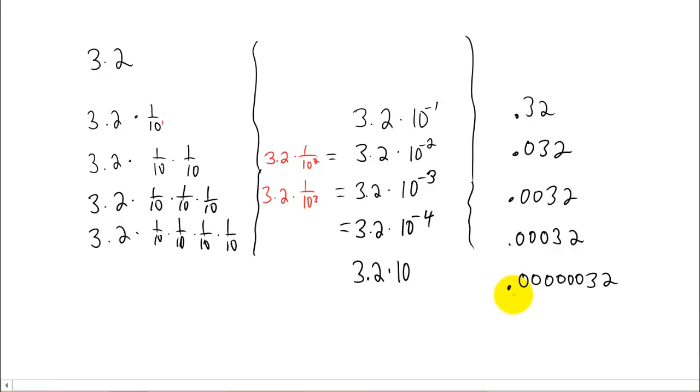What is that power? Well, you just have to count the decimal places. See, 3.2 would be here, and you're counting 1, 2, 3, 4, 5, 6, 7 decimal places to the left. So we must have multiplied 3.2 by 10 to the negative seventh power. Again, this is also scientific notation.